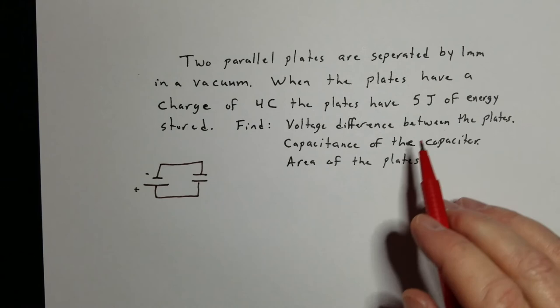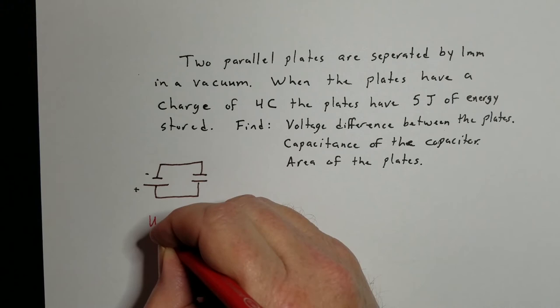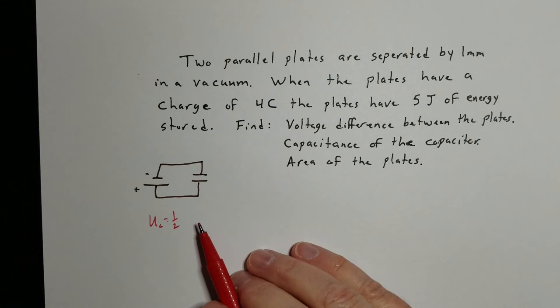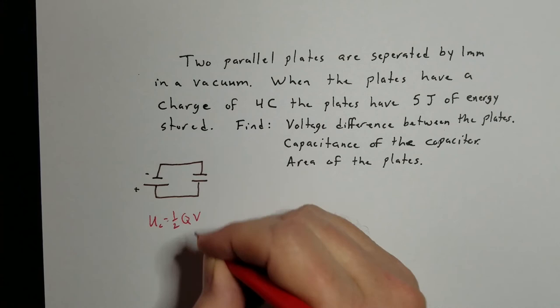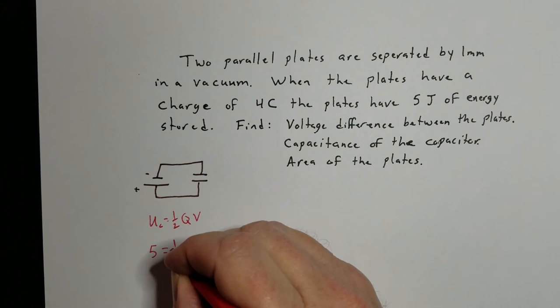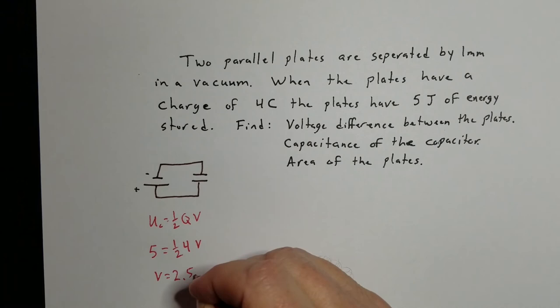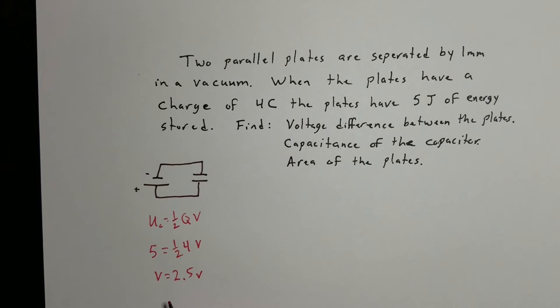Since we have the energy, let's start there. U = ½QV. We have two options — using Q and V, or C and V² — but since we have charge, we'll use the first. So: 5 = ½ × 4 × V, which gives V = 2.5 volts between the two plates.